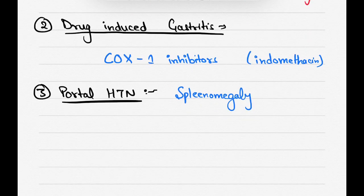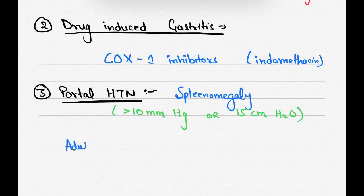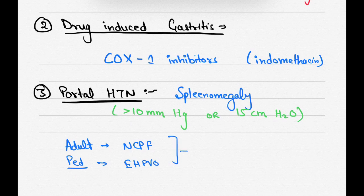And if we measure the pressure of portal vein, so it should be more than 10 mm of mercury or more than 15 cm of water. And it causes non-cirrhotic portal fibrosis in the adult. The most common cause of portal hypertension in adults is NCPF, which is non-cirrhotic portal fibrosis, and in pediatric age group, it is EHPVO, extrahepatic portal vein obstruction. So, it causes esophageal varices, which bleeds and causes hematemesis.